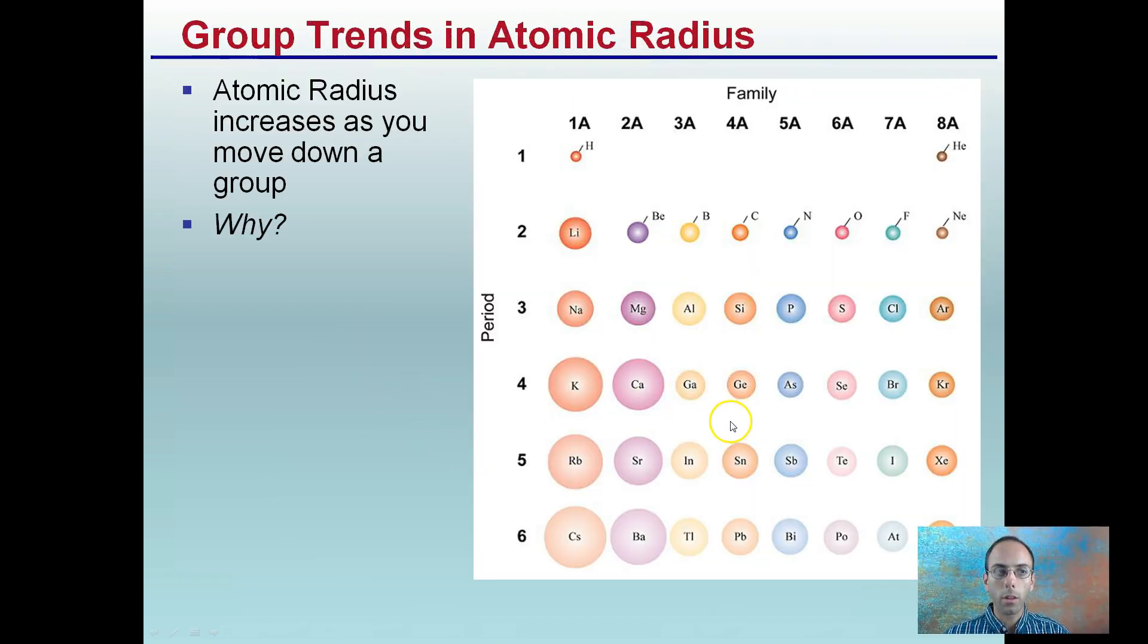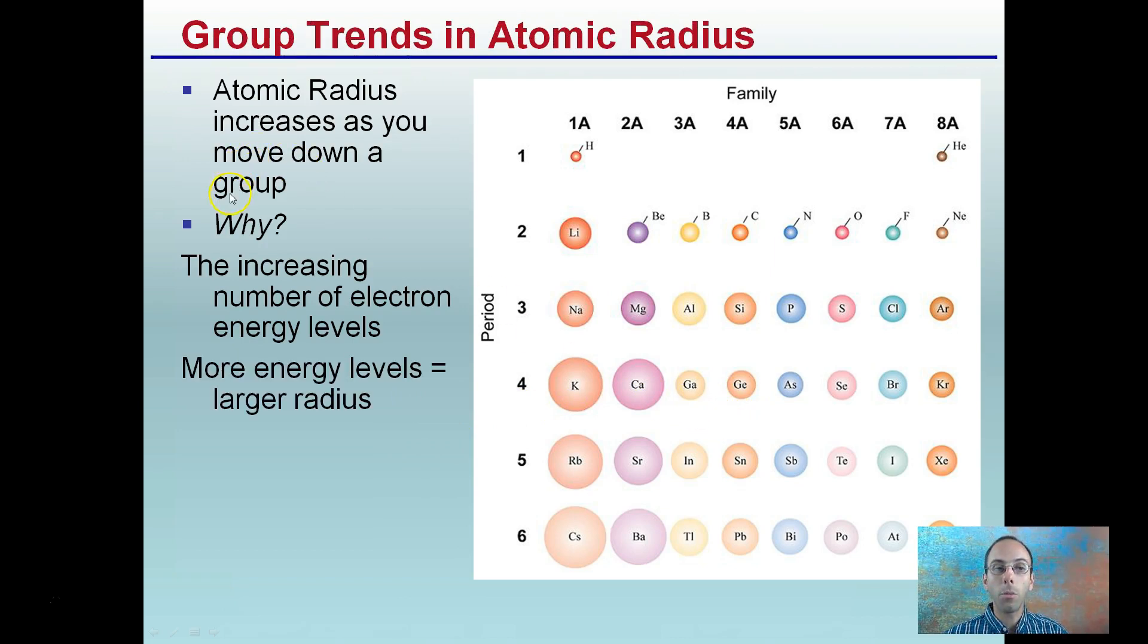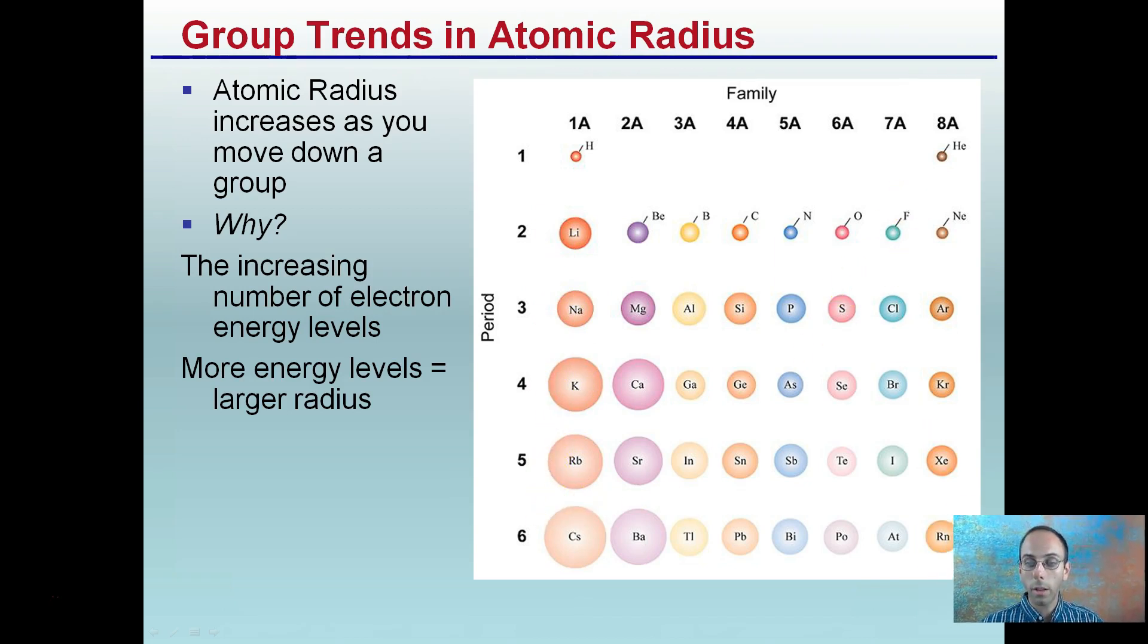So what does this look like? What do our trends look like? Well, atomic radius increases as you move down a group. So let's just look at group one here. As we move down our group or our family, we see the radius is increasing. Well, why does this occur? This increase that we see in our radius is because of the increased number of electron energy levels. The more energy levels, the larger the radius. So if we compare our period two, as we go down to period four, we notice these radius all get larger.